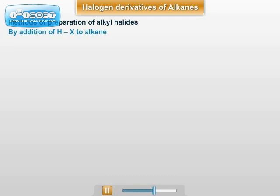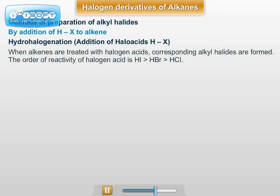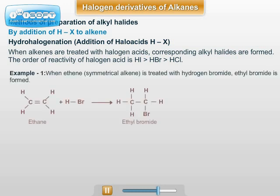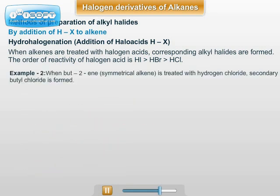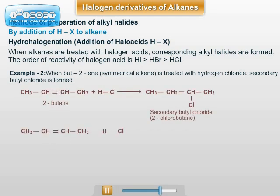The next method of preparation is the addition of HX, that is a halogen acid, to an alkene. When an alkene is treated with a halogen acid, alkyl halides are formed. For example, when ethene is treated with hydrogen bromide, ethyl bromide is formed. Example number two: when but-2-ene is treated with hydrogen chloride, secondary butyl chloride is formed.